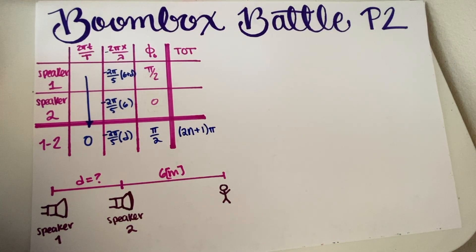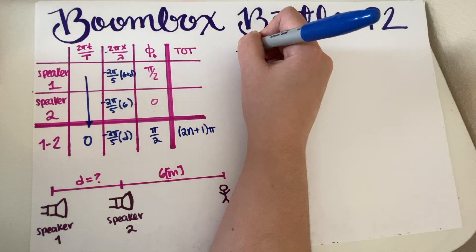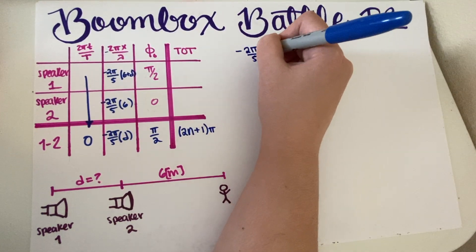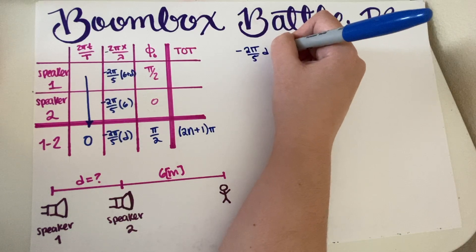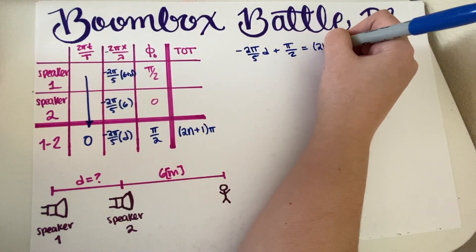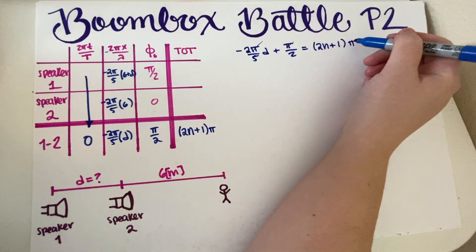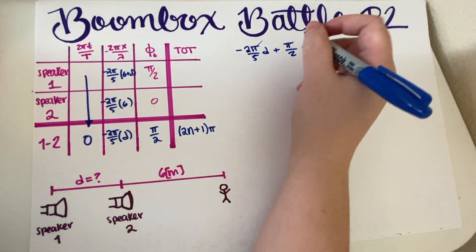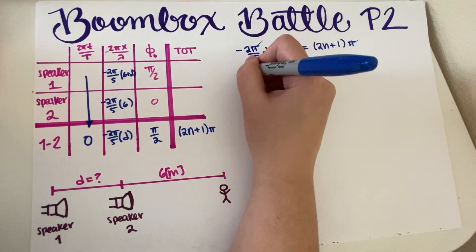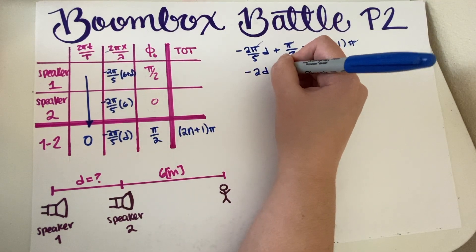Let's get an equation out of this by copying from the boxes. The pi's cancel as usual. Now it's just algebra — feel free to work through it yourself at this point.